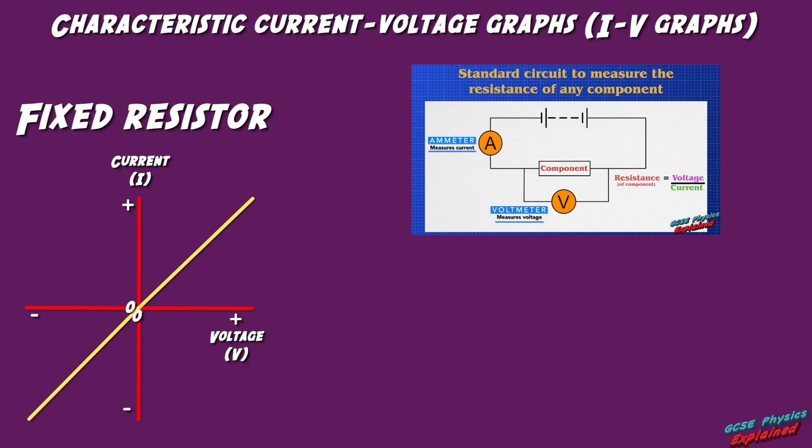A fixed resistor behaves exactly the same in the forward and reverse directions. So the graph in the reverse negative direction is a mirror image of the forward positive direction. Notice that the slope or gradient is constant, which means that the resistance is constant or fixed, which is why we call it a fixed resistor.